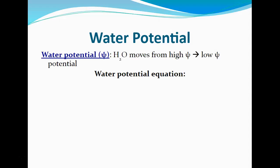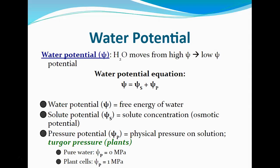Now, water potential. There is math involved in figuring out how water moves across the membrane. Water moves from high to low potential — that's the general statement. The symbol for water potential looks like a trident, which is how you can remember it. The water potential equation is: water potential equals solute potential plus pressure potential.